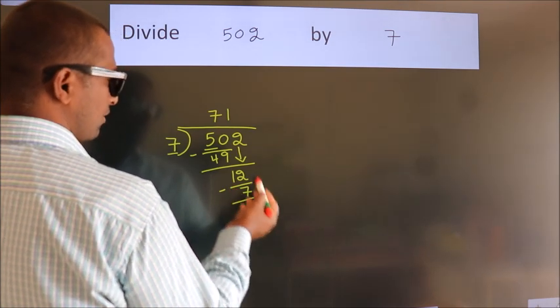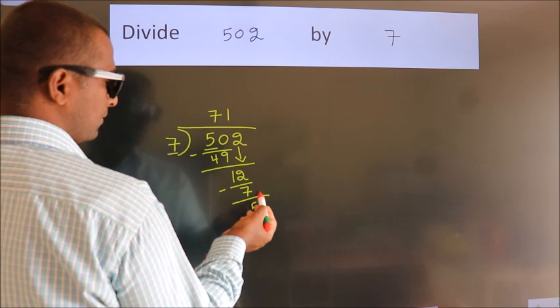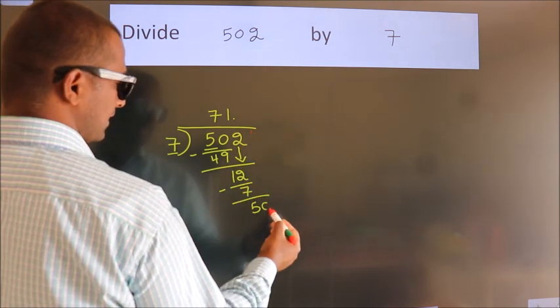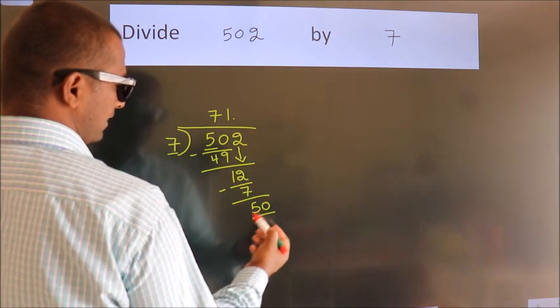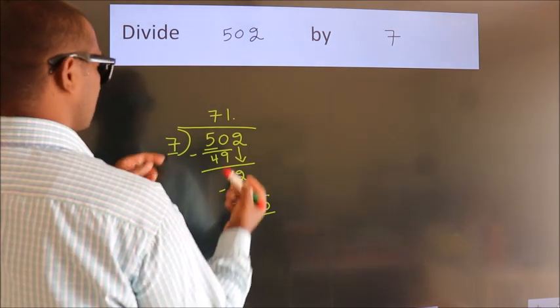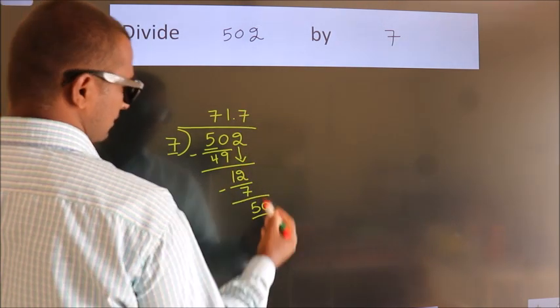After this, no more numbers to bring it down. So what we do is, we put dot, take 0. So, 50. A number close to 50 in the 7 table is 7 times 7, which is 49.